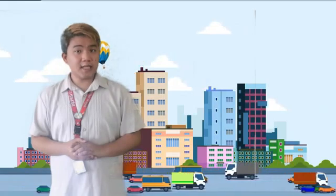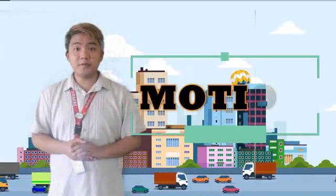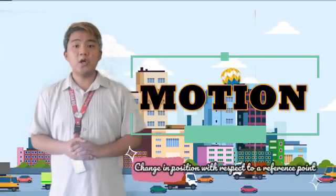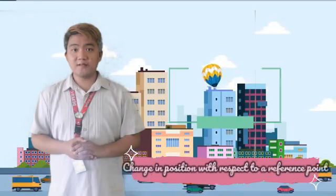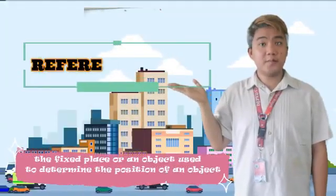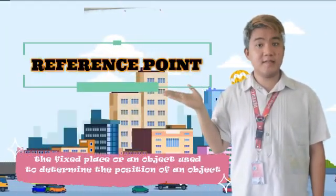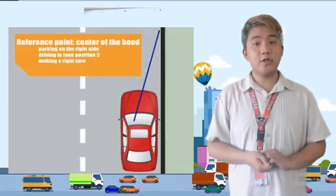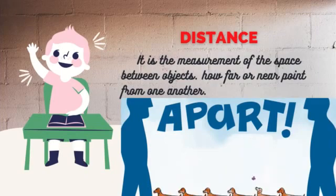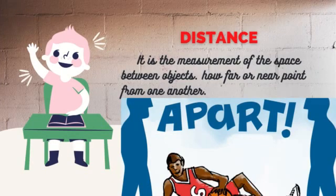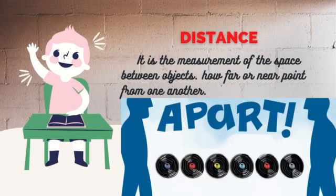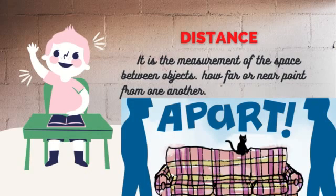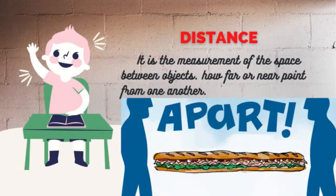But what do you mean by motion? Motion is relative. It is a change in position with respect to a reference point. A reference point is a fixed place or an object used to determine the position of an object. Distance is the measurement of space between objects — how far or near a point is from one another.